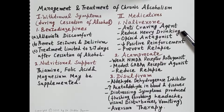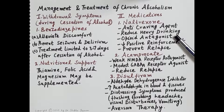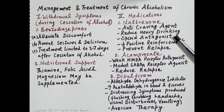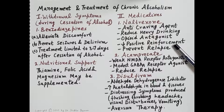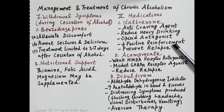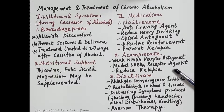Naltrexone is an anti-craving agent that reduces heavy drinking. It is an opioid antagonist — it prevents the action of endorphins, thereby preventing the increase in dopamine levels in the mesolimbic pathway. Therefore, the person is unable to experience feelings of pleasure, excitement, or euphoria. Naltrexone reduces positive reinforcement and also prevents relapse.